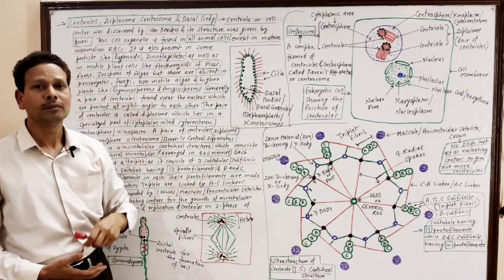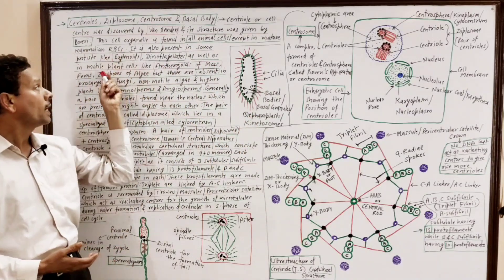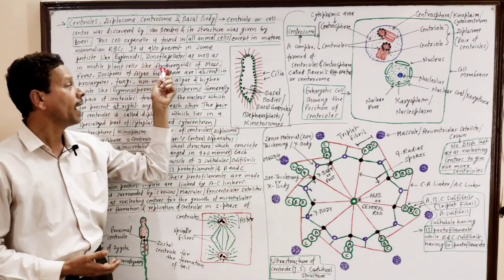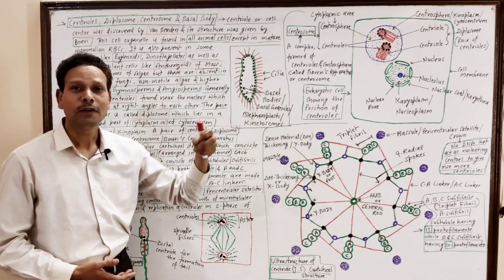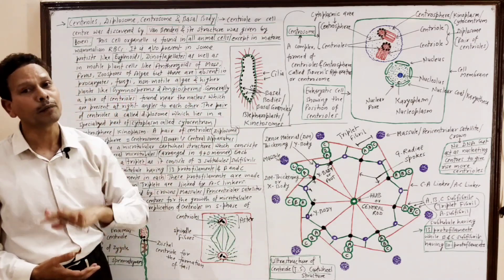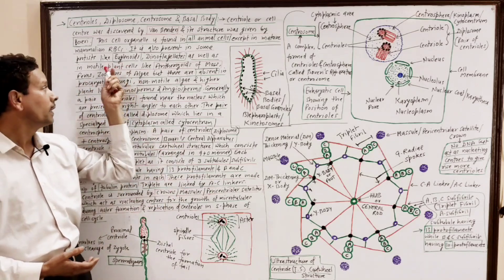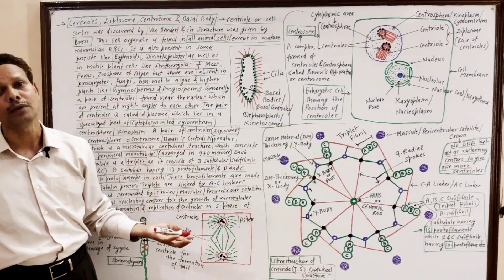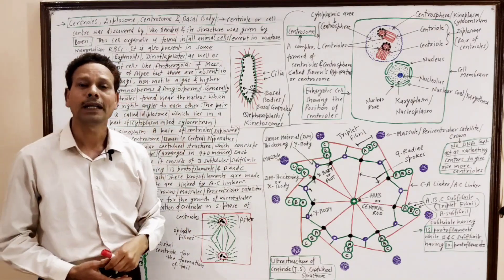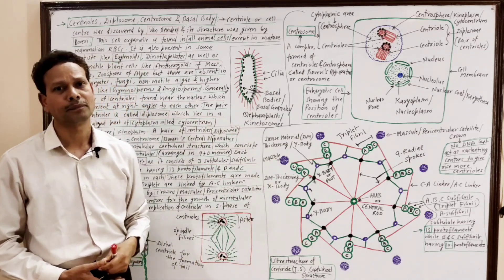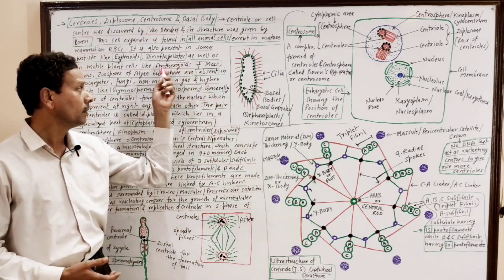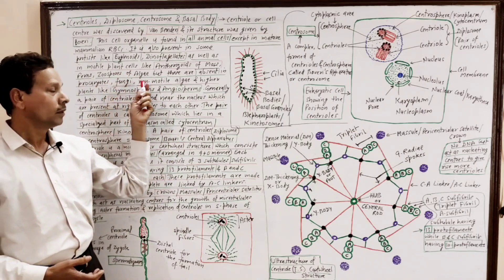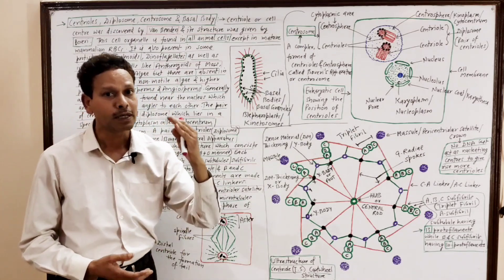In case of lower plants having motile cells — plants which possess motile cells like anthrozoids of most plants including bryophytes like Funaria and Marchantia, and in pteridophytes — the anthrozoids also possess centrioles. In some motile algae like Chlamydomonas and motile spores, the centrioles are also present.